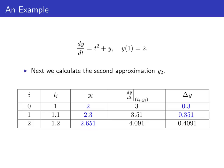We use the same process to find y₂, our second approximation, using the information in the i = 1 row. t₁ is found by taking t₀ and adding Δt = 0.1, so t₁ = 1.1. We already calculated y₁ = 2.3. Then we find dy/dt at (t₁, y₁) using the differential equation. Delta y is then dy/dt at (t₁, y₁) times Δt = 0.1, giving Δy = 0.351. Adding Δy to y₁ gives y₂ = 2.651.